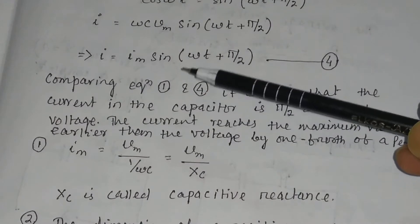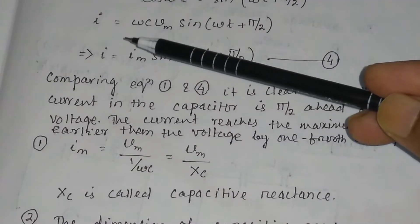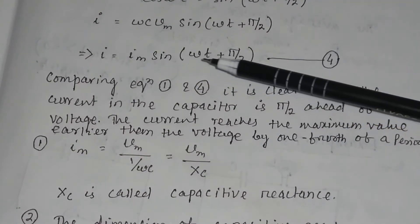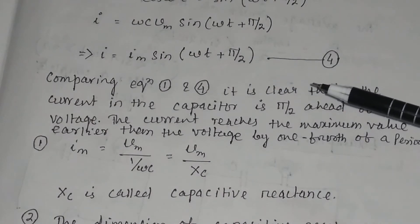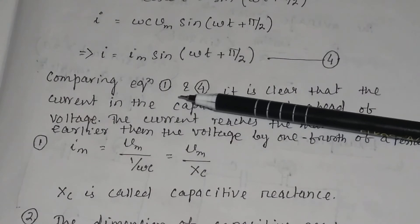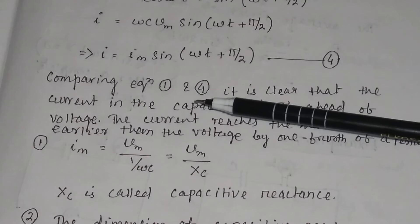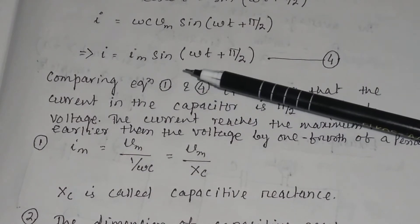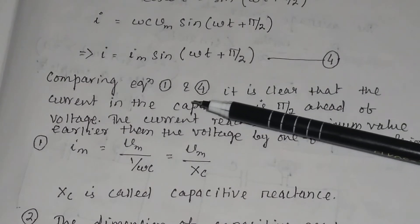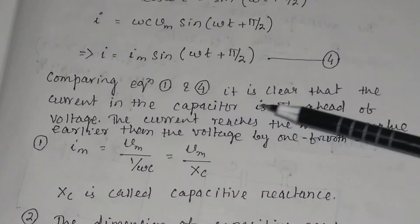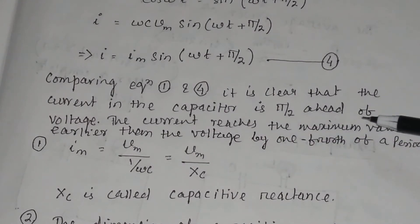This constant term ωC Vm we will call Im. So I = Im sin(ωt + π/2). In equation 1, we have the voltage V = Vm sin(ωt), and we get the current I = Im sin(ωt + π/2). Comparing these two equations, it is clear that the current in the capacitor is π/2 ahead of the voltage.